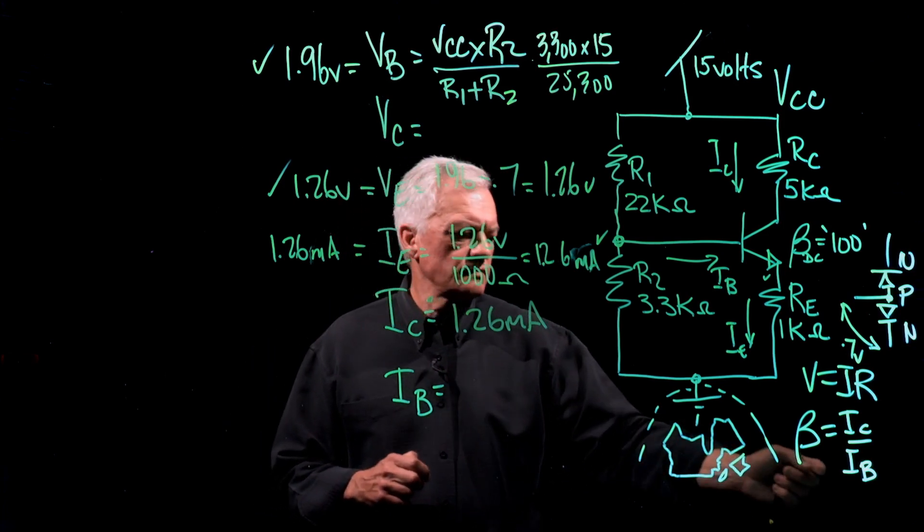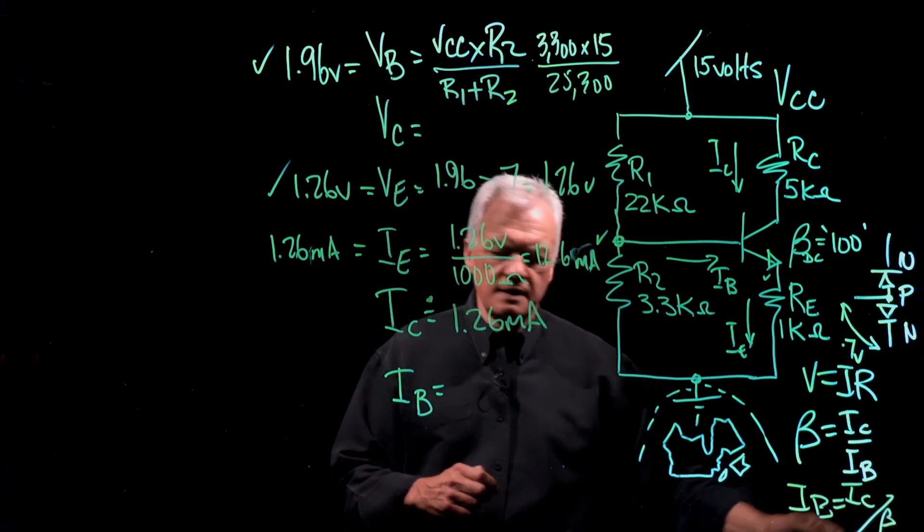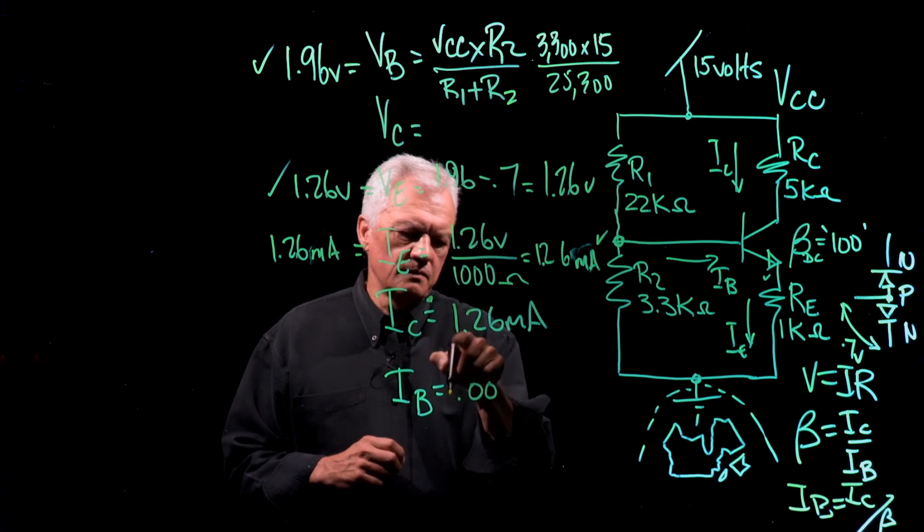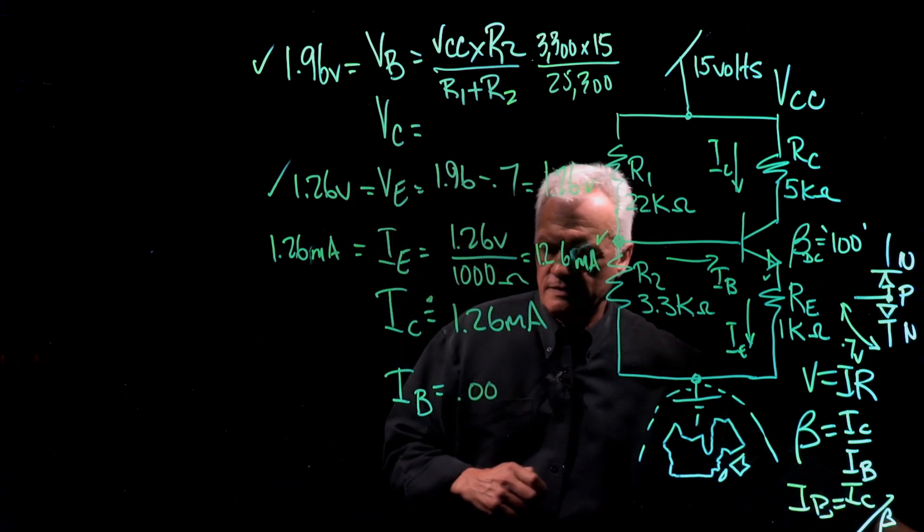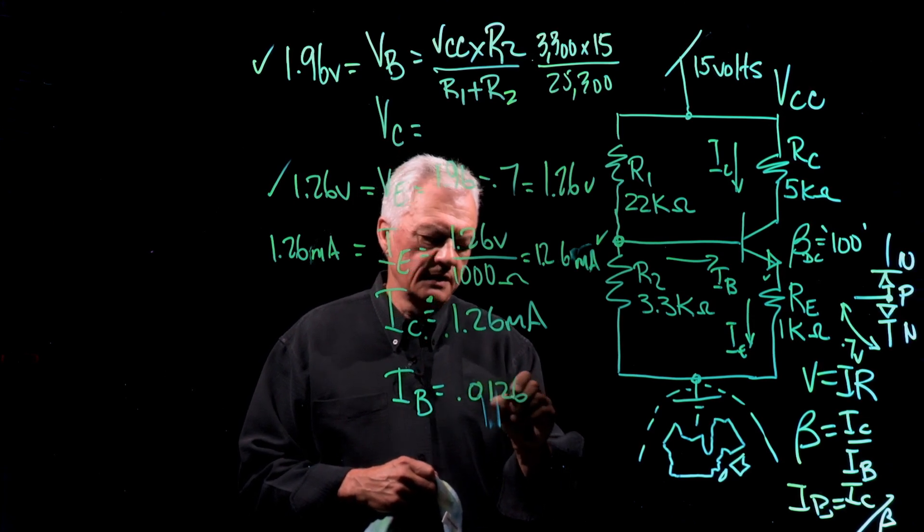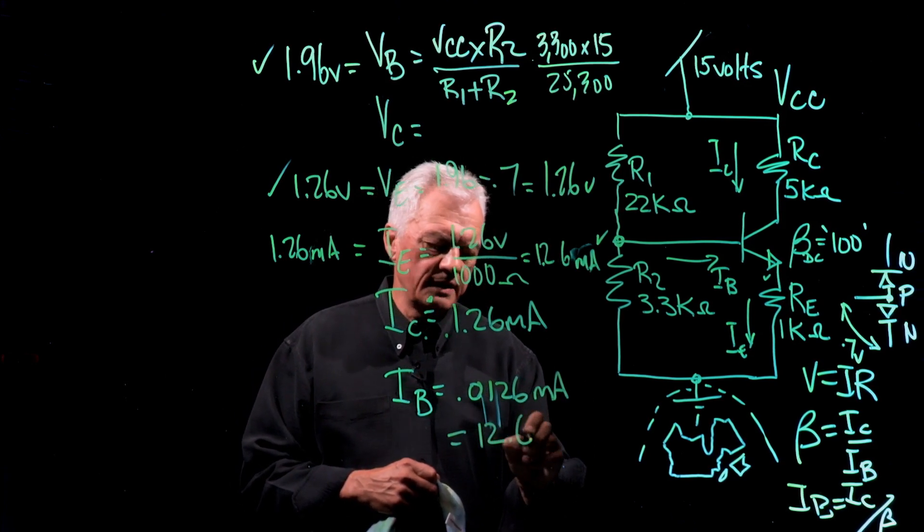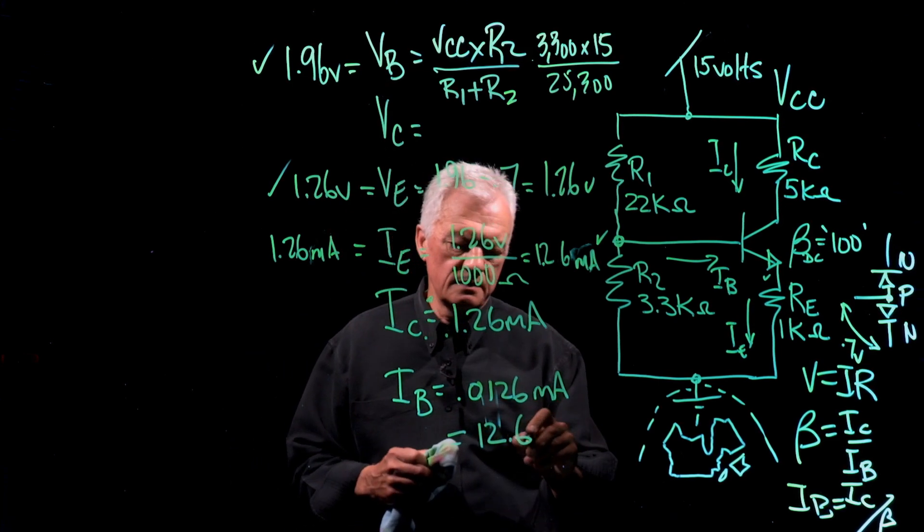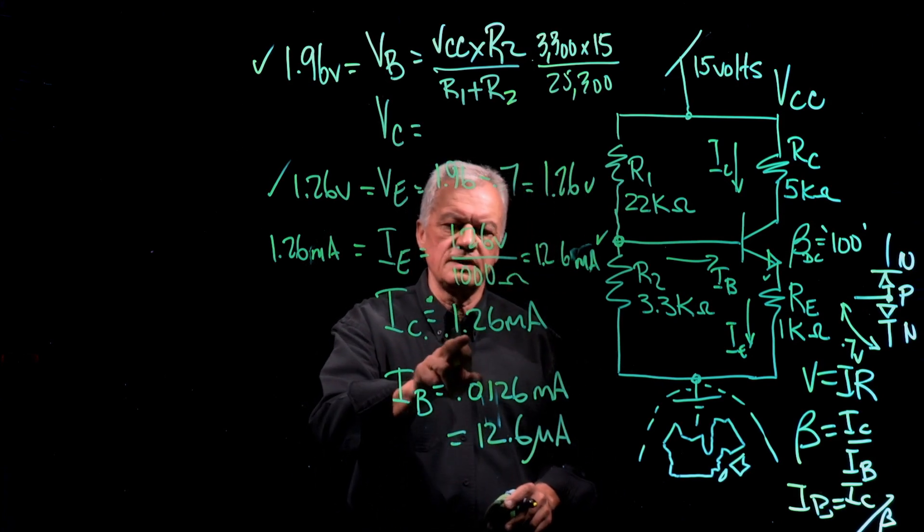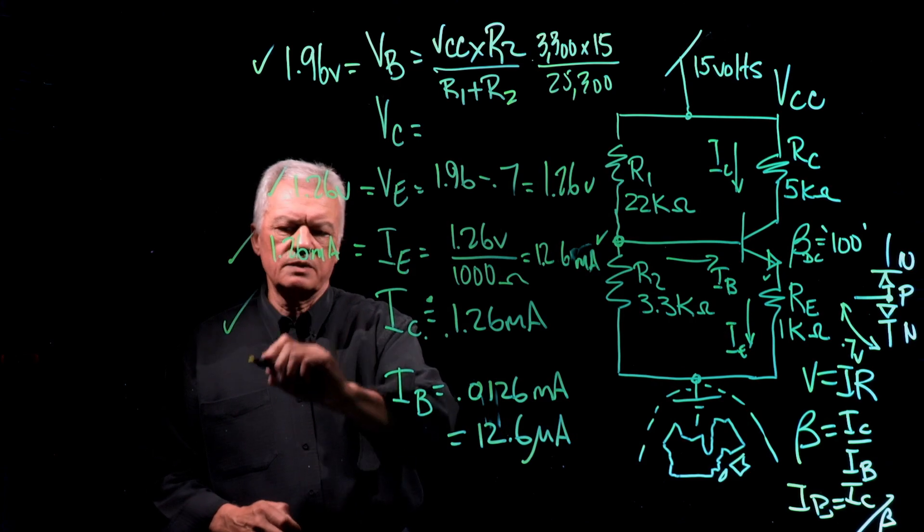So what about IB? Well, IB is equal to, so let's rearrange this, IB is equal to IC divided by beta. So we have IC. If we divide that by 100, it would be something like this: 1, 2... I'm going over too many. So 1, 2, so that would be 0.0126, again milliamps, or it's equal to 12.6... anybody? Thank you. Microamps. That's why we say that, because this is so small compared to this, that we can make the approximation that IC and IE is the same. So we've got this one, we've got this one, we've got this one, which only leaves VC.